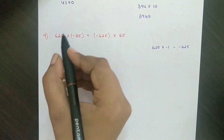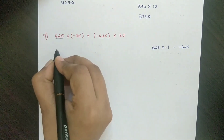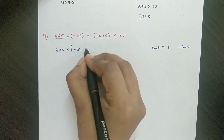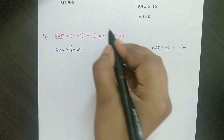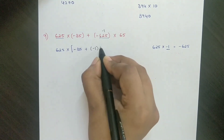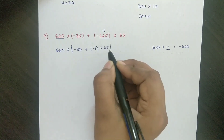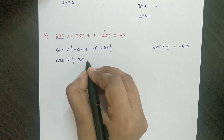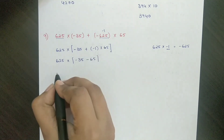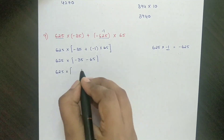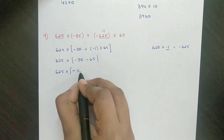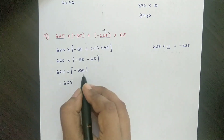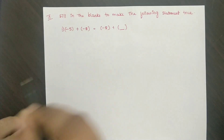In this problem, take 625 as common: 625 into minus 35 plus. Taking 625 as common, minus 1 remains: 625 into minus 35 plus into minus 68 equals 25000.